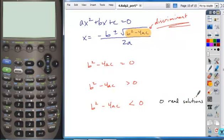Which means how many, or what other type of solutions are there going to be? It's going to have two imaginary solutions. Okay, so if you have a negative number under a radical, your solutions are going to be imaginary. So if the discriminant is a value less than zero or a negative value, you're going to have two imaginary solutions and no real solutions.